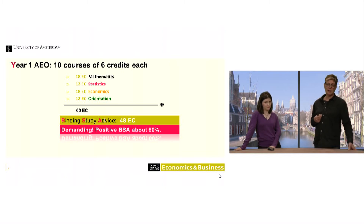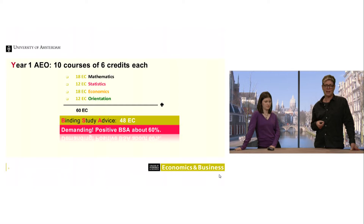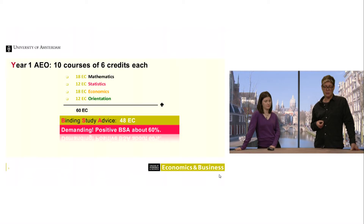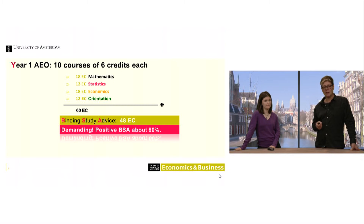You'll build on these techniques in year two and three. It's quite demanding. We have a binding study advice, meaning you need to score 84 credits — that means passing eight or more courses. If you don't, the studies end after the first year. We see around 60% positive binding study advice overall, slightly higher for the international group and slightly lower for the Dutch group.